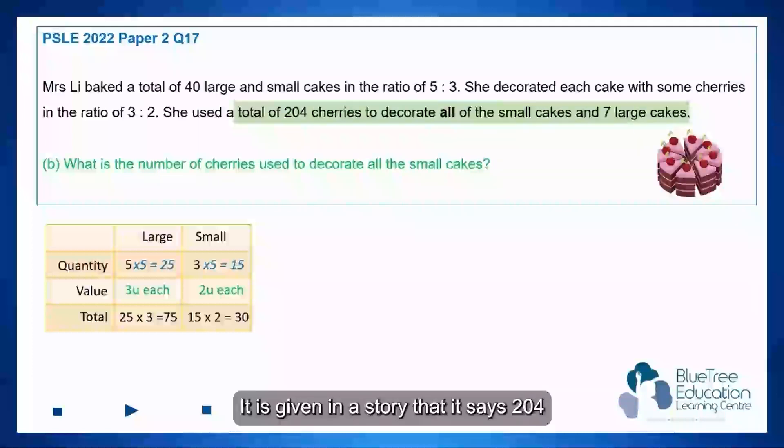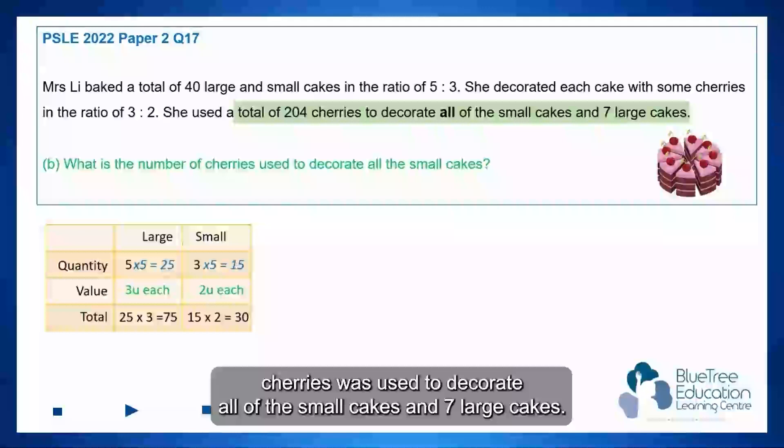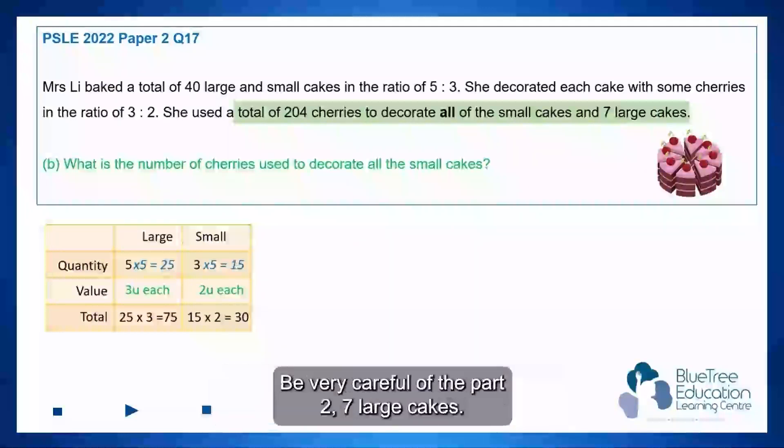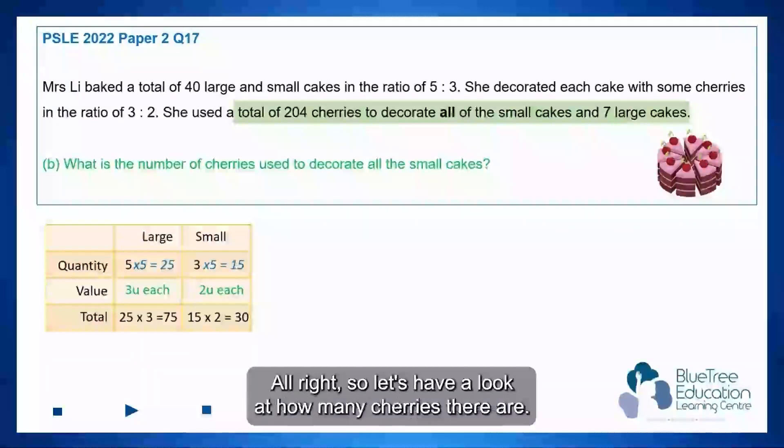It is given in the story that it says 204 cherries was used to decorate all of the small cakes and 7 large cakes. Be very careful of the part, 7 large cakes, not all the large cakes.